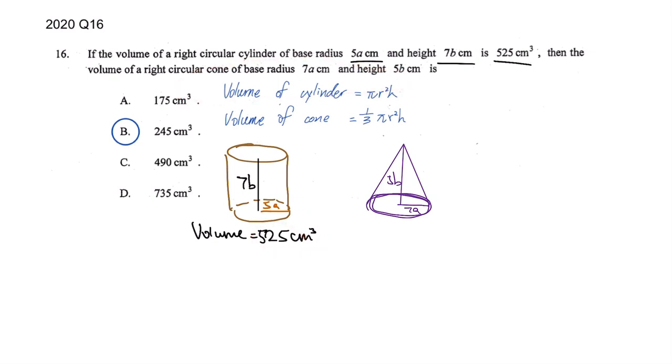Because we have the actual value for it, if we write it down it will be πr²h equals to 525. We don't have a pi value so we don't write it, and then the rest of the thing just write it.